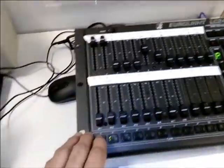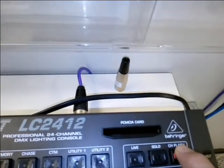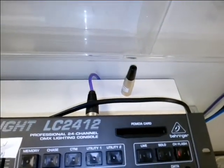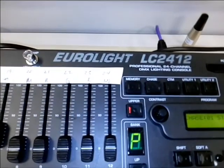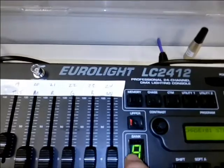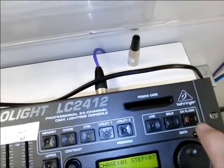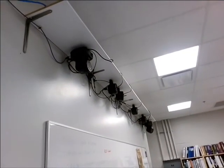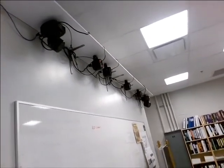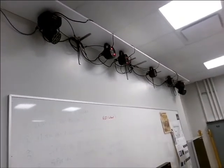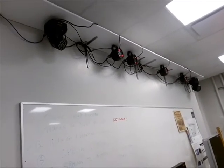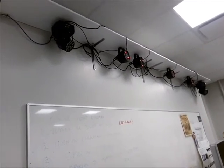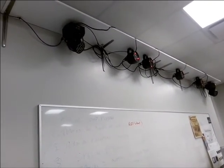Now what I can do is press the flash button. I need to go back to preset nine and turn off the flash. When I hit flash one, it'll come up with my four par lights in red.